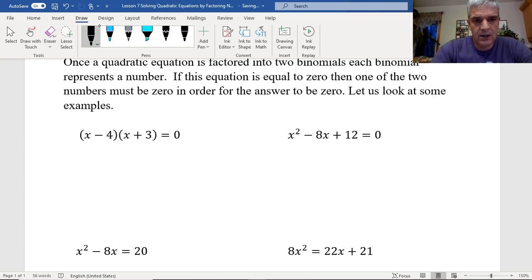And in this particular case, when we get two binomials, this is like one number here. This represents a number, and this here represents a number. These are two different numbers that are being multiplied by each other, and they equal 0. And the only way that can happen is if one of these two numbers is 0.